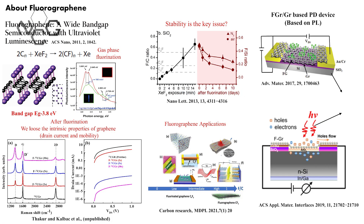One major drawback with fluorination is that once you fluorinate graphene, you lose its intrinsic properties — for example, mobility and drain current — and we end up with something comparable to conventional semiconductors in terms of mobility. So our main focus is how to improve the mobility while keeping the pristine graphene properties and also introducing some band gap.